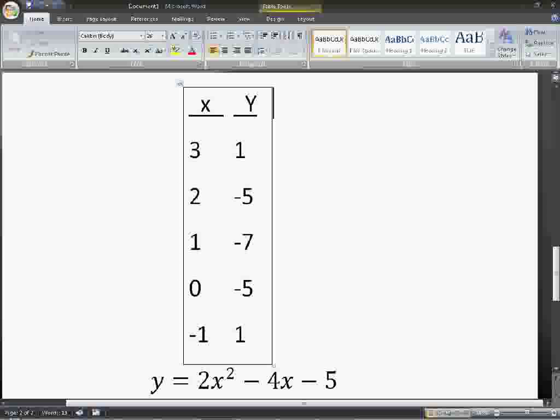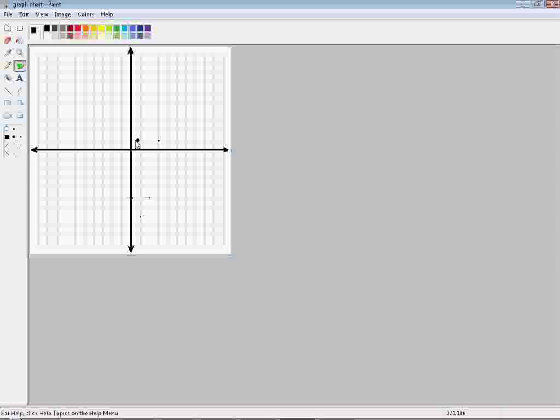Then, negative 1 and 1, which should be right across from there. Negative 1 and 1. Perfect. Now we're going to graph the parabola by connecting the dots. So, you can draw a line straight through there to that dot. Obviously if you're actually drawing this it might look neater and curvier. There. And there is a parabola.